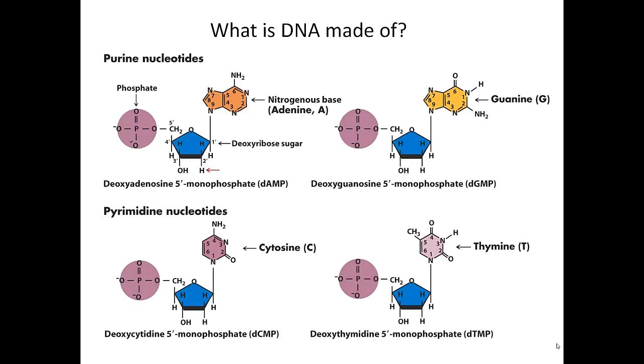DNA is made up of deoxyribonucleotides, and these all have three main components to them. They have a sugar called deoxyribose, which is shown right here. They have a phosphate group, and then they have a base. All of these deoxyribonucleotides have the same sugar and phosphate part, but they differ in the base.